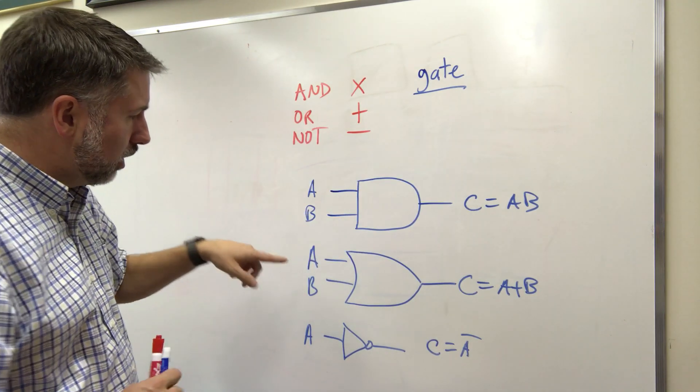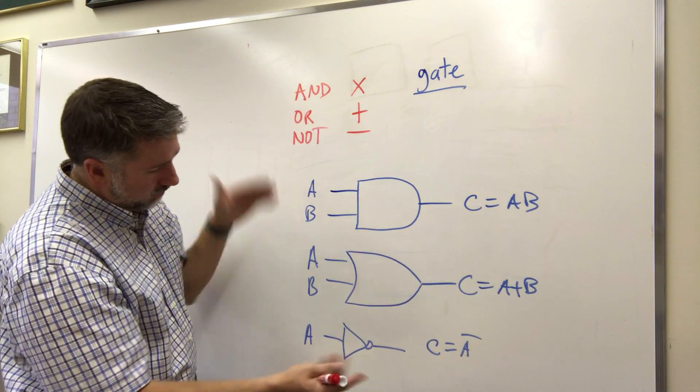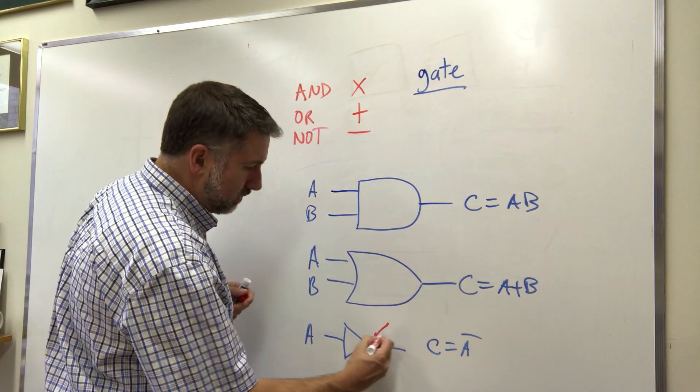AND sort of looks like a D. OR has this sort of curvy back to it and looks kind of like a spaceship I don't know. And then NOT, the important thing about NOT is actually this circle.